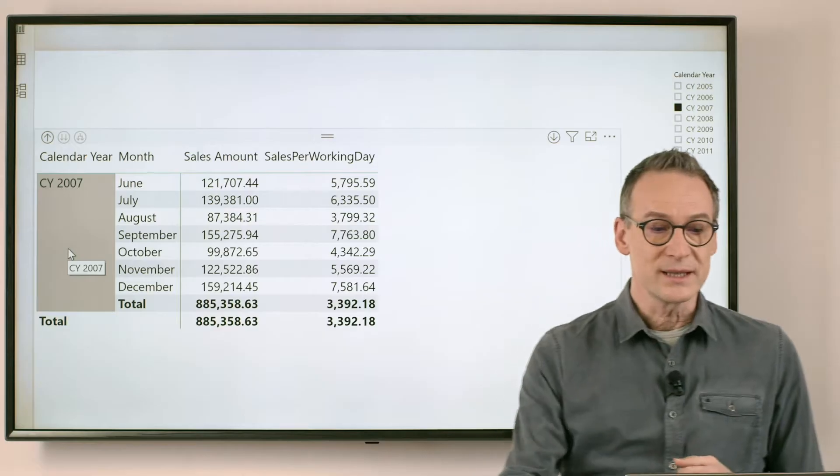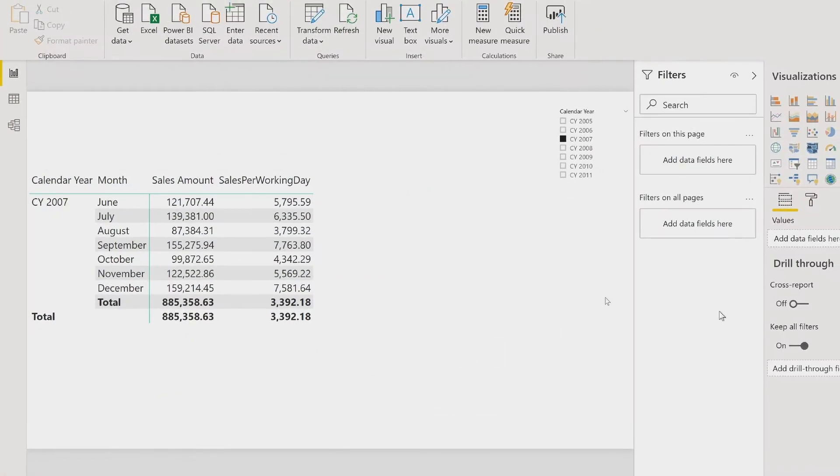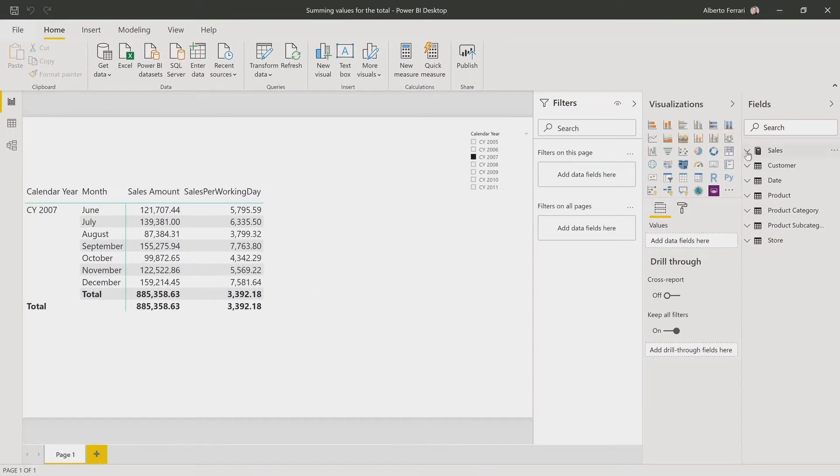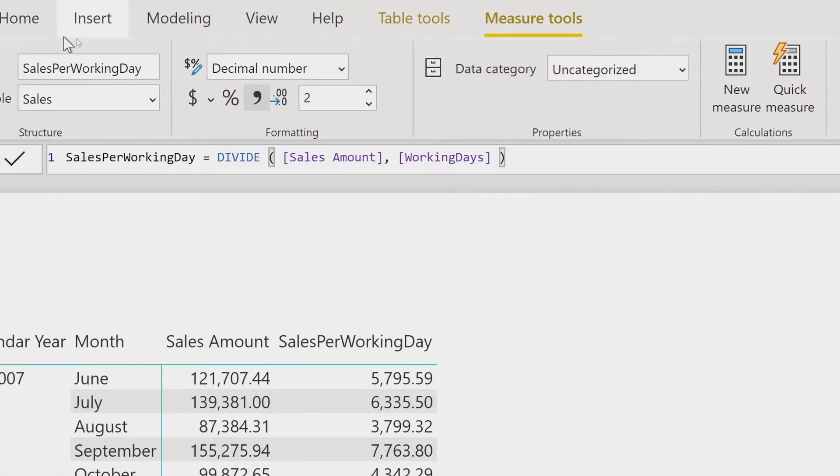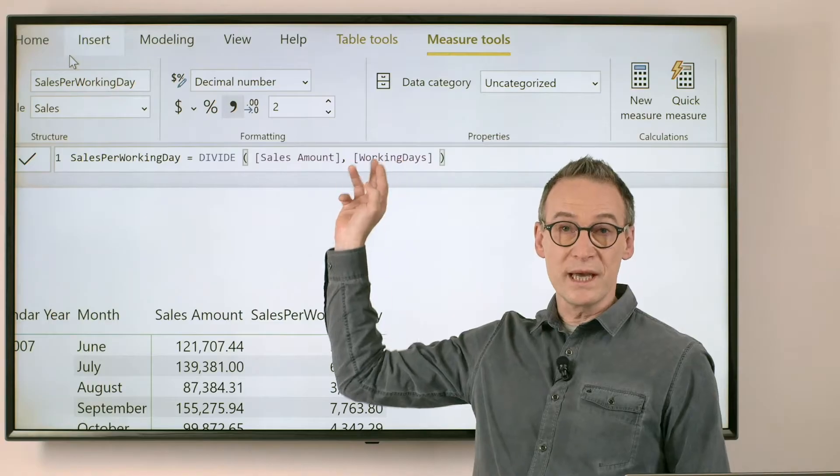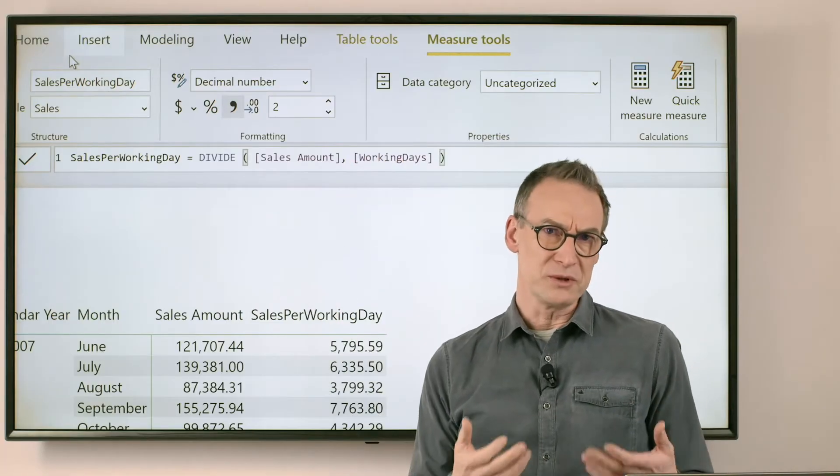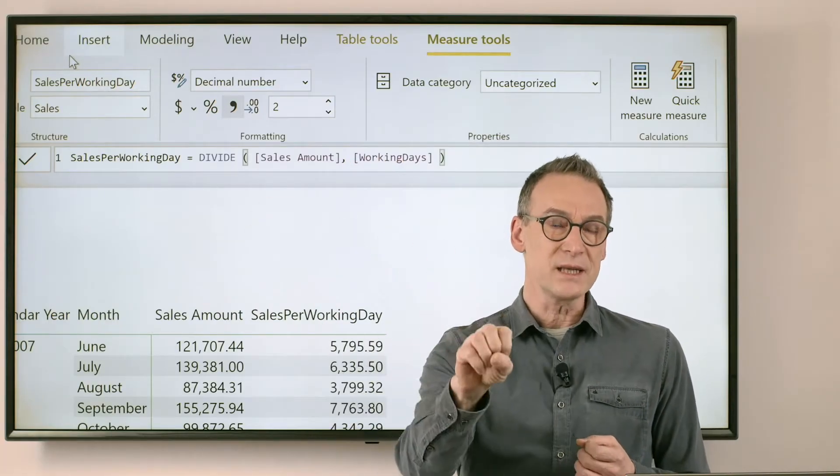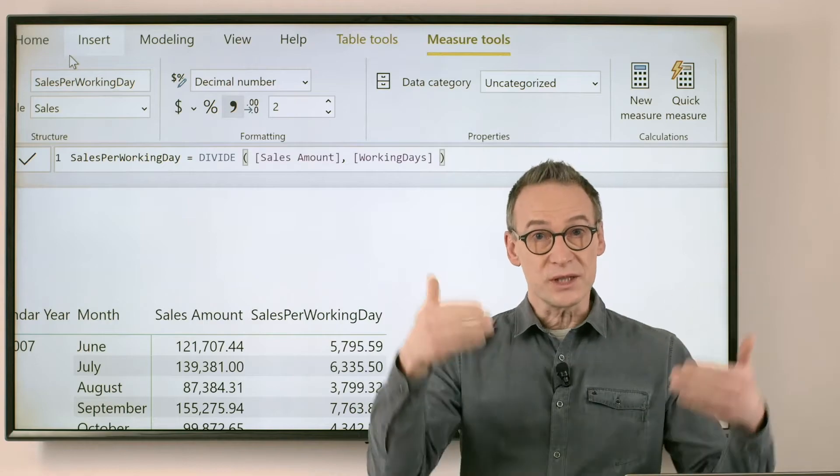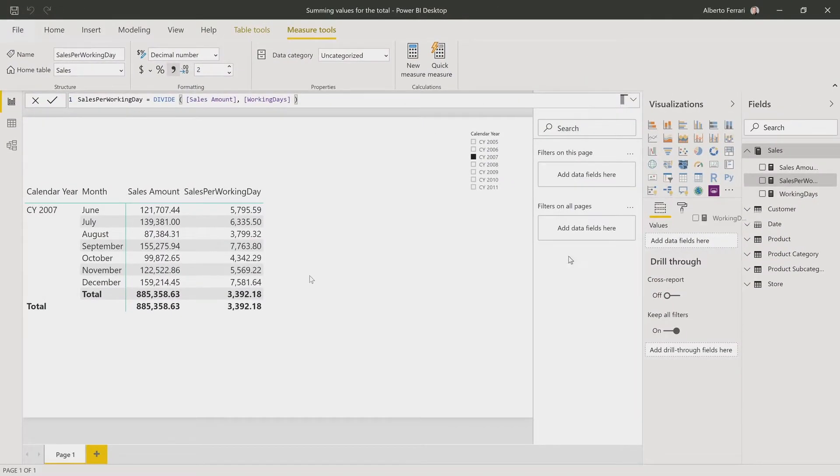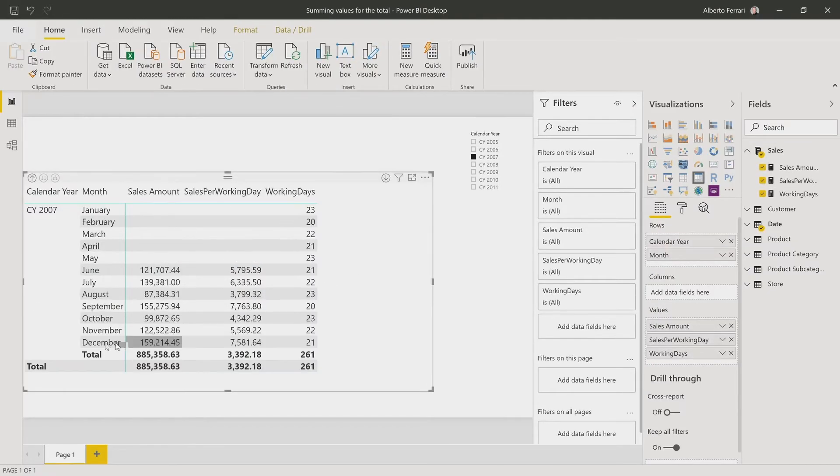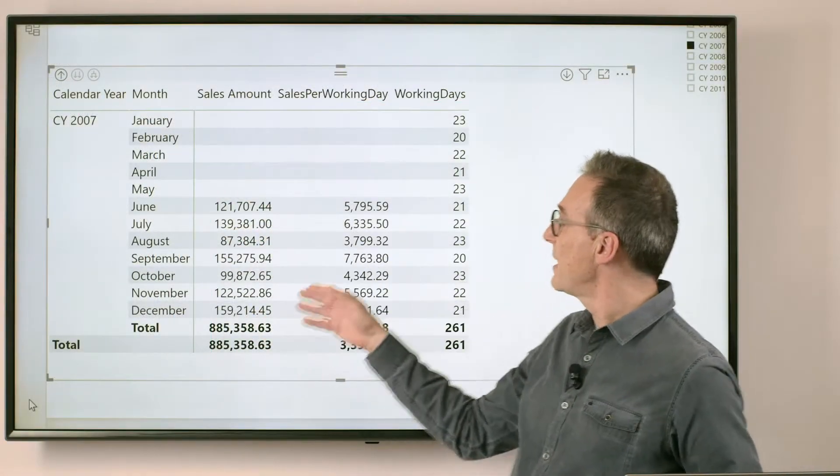Well, the problem is that sales per working day is defined as the sales amount divided by the number of working days. So the measure by itself is just a simple division. Working days might be the problem. In order to debug it, we just take working days and we put it in the report to see the different values. If we do that, we put working days in the report, and you see that we have sales amount, we have working days...